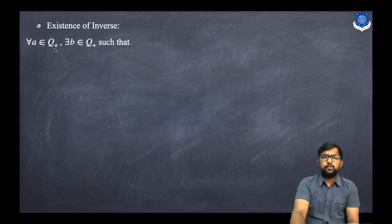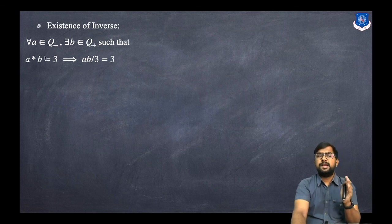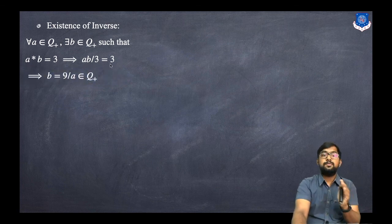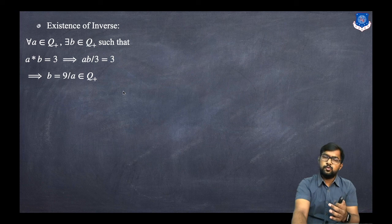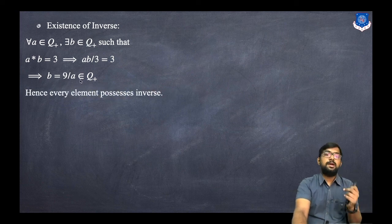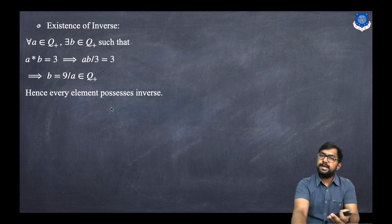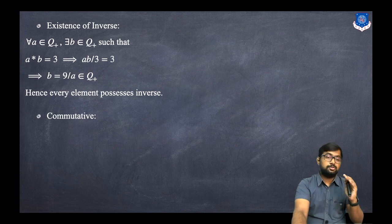For existence of inverse: for every a in Q+, we need b in Q+ such that a star b equals the identity 3. So ab/3 = 3, which gives ab = 9, thus b = 9/a, which is also in Q+. So every element has an inverse, specifically 9/a. Multiplying a and 9/a under the operation gives 3, the identity. So the inverse exists for every element.